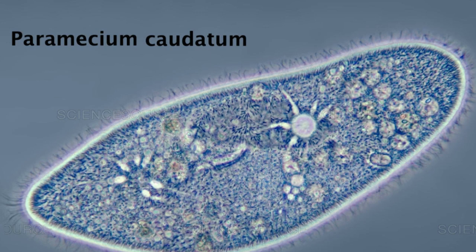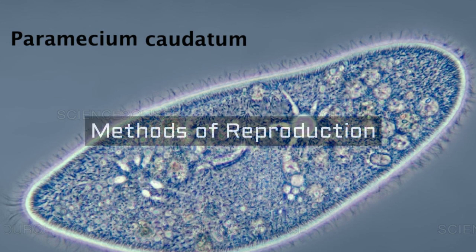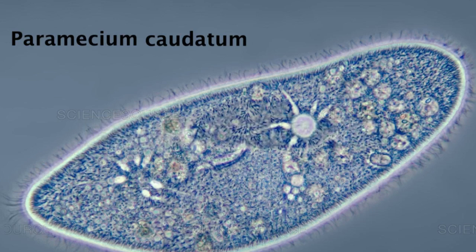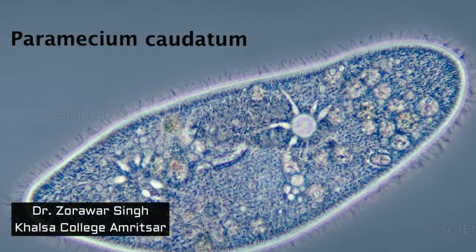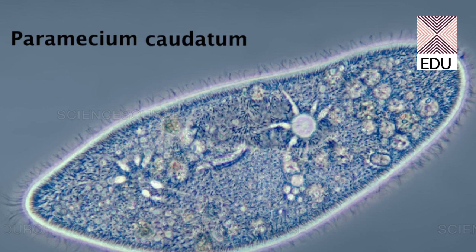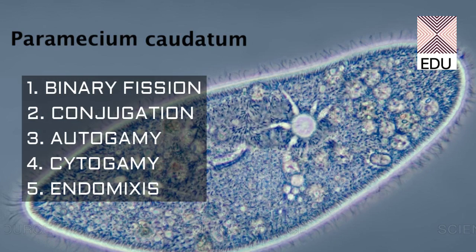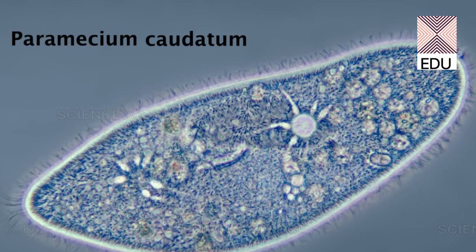Good morning students. Today we are taking up a very important topic in paramecium: reproduction. Paramecium divides basically by five types of reproduction methods. First is binary fission, second is conjugation, third is autogamy, fourth is cytogamy, and fifth is endomyxis. These are the five methods of reproduction in paramecium, and we will be taking them up one by one.